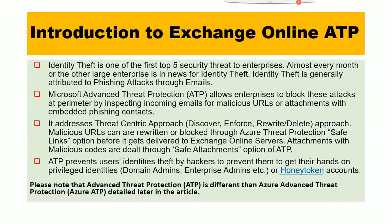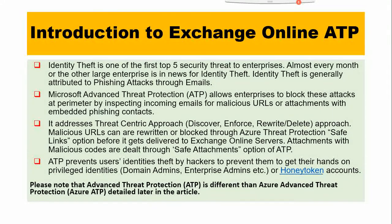I just want to establish that fact before we dive into the solution. Microsoft Advanced Threat Protection allows enterprises to block these attacks at the perimeter by inspecting incoming emails for malicious URLs or attachments with embedded phishing content. We will see all this in our demonstration — that is the purpose of this presentation, to see what Microsoft can deliver on these promises.